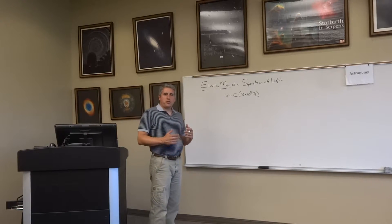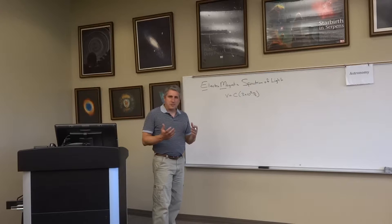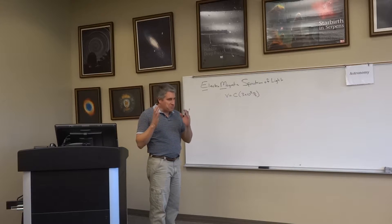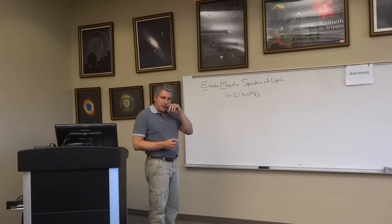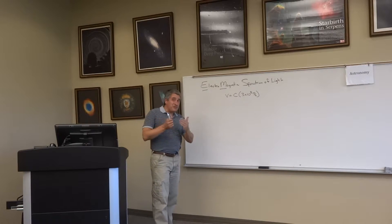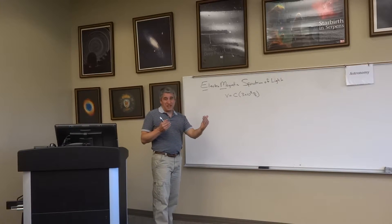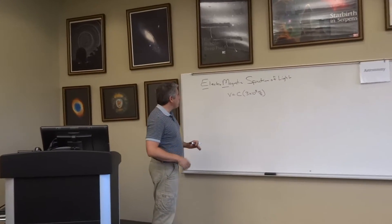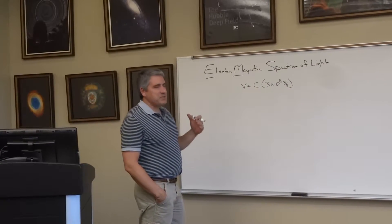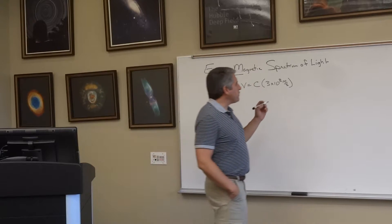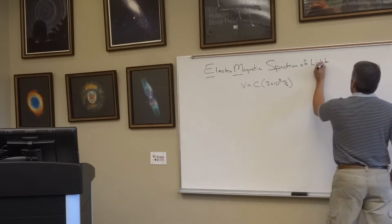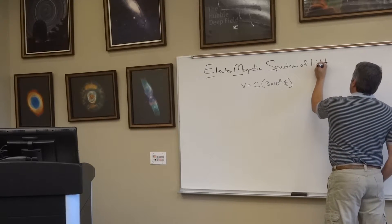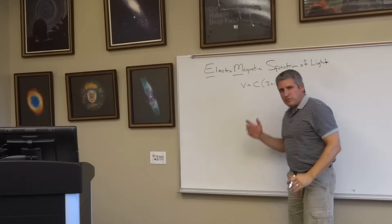Now that we have a sense for what light is — some interesting combination of waves and particles — the best way to describe the different types of light is to talk about it as a wave. Light comes in lots of different flavors; there's an entire range, an electromagnetic spectrum of light.